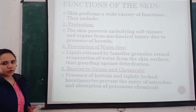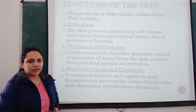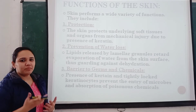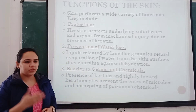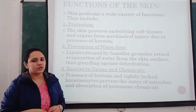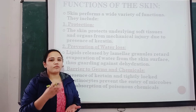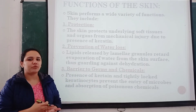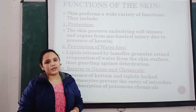The first function is protection. Skin protects our underlying organs and tissues of our body, basically from mechanical injury, due to the presence of keratin. So this protection property of the skin is mainly given by keratin. Because of the presence of keratin, skin is responsible for protection of underlying tissues and organs from mechanical injury.